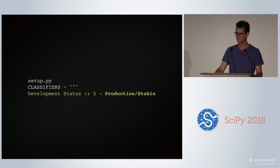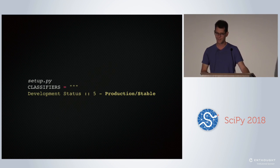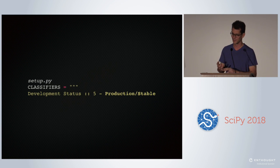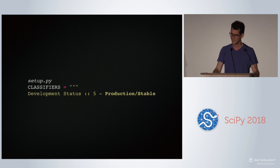Also, calling something 0.19.0 is really terrible marketing. And it's not just SciPy — you've got Pandas at version 0.23, scikit-learn at 0.21, statsmodels, scikit-image — they're all 0.something. This is horrible marketing. So why do we do that?